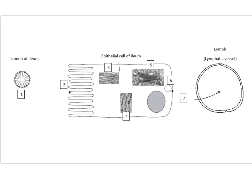Several different organelles are important in the absorption of lipids into the lymph — not the blood; the lipids that are absorbed will end up in the lymph, which is another transport system alongside the blood. First, the smooth endoplasmic reticulum converts the absorbed monoglycerides and fatty acids into triglycerides. Those triglycerides then move towards the Golgi apparatus. The rough endoplasmic reticulum synthesizes proteins, which also move towards the Golgi apparatus.